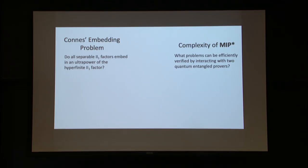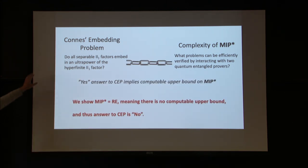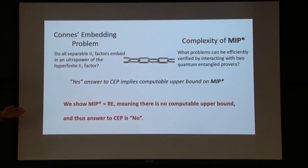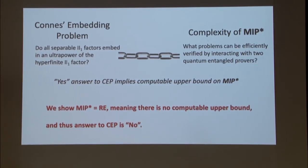What problems can be efficiently verified by interacting with two quantum entangled provers? Somewhat remarkably, there's a connection: a yes answer to the Connes embedding question implies a computable upper bound on the complexity class MIP*. Our main result shows that MIP* equals RE, the set of recursively enumerable languages, which means there is no computable upper bound — and therefore the answer to this operator algebra question is no.